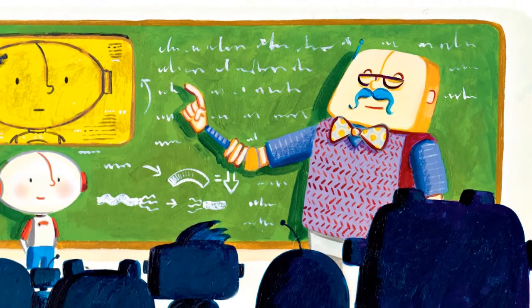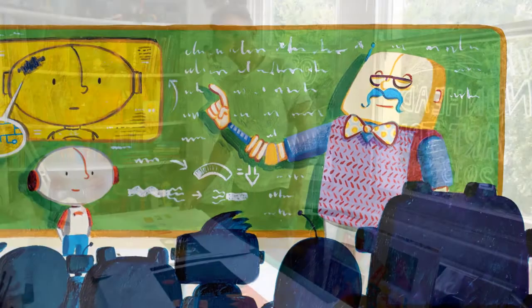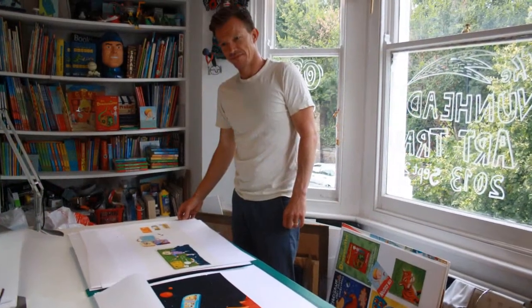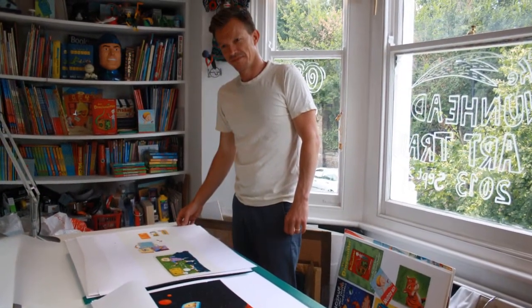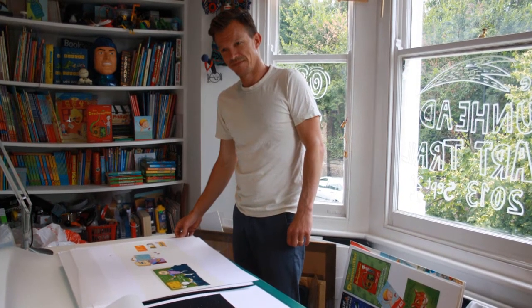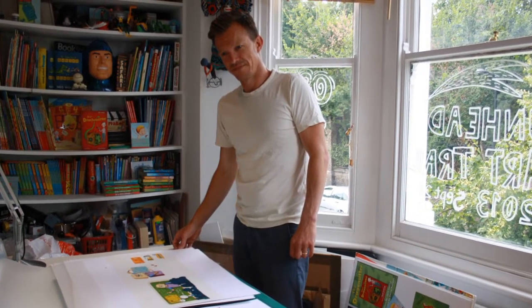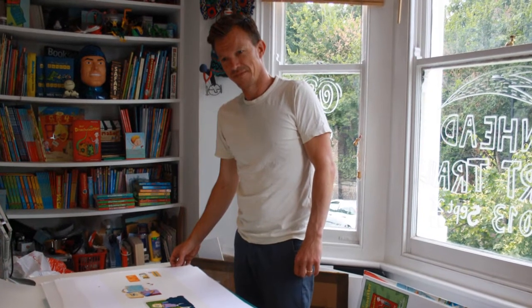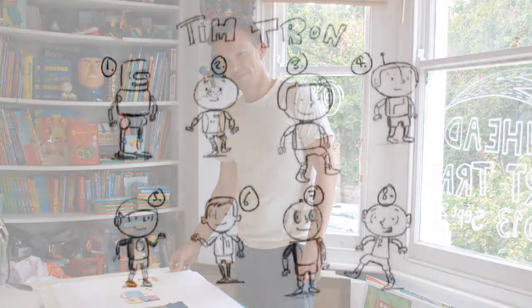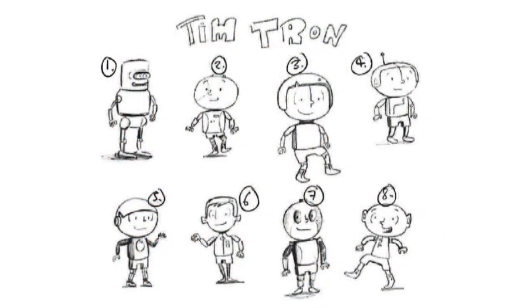So our next job was to find an artist. This is Gary, the award-winning illustrator who brought Tim Tron to life. The first thing Gary did was to create a series of character ideas for Tim Tron. We then showed them to the children here at the Children's Trust to find out which of them were their favourites.